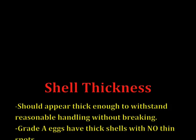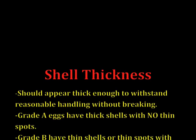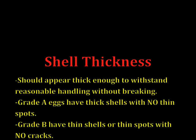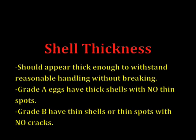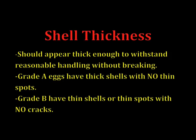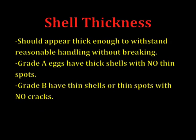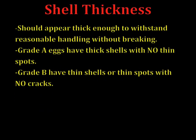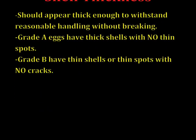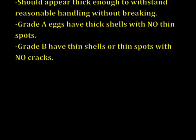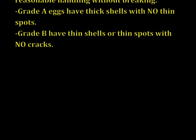Shell Thickness: The shell should appear thick enough to withstand reasonable handling without breaking. Grade A eggs have thick shells with no thin spots. Grade B eggs have thin shells or thin spots with no cracks.